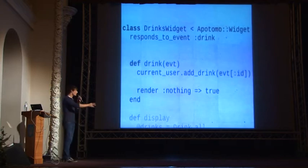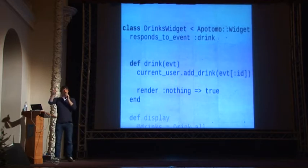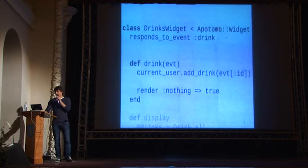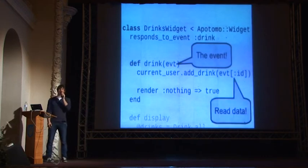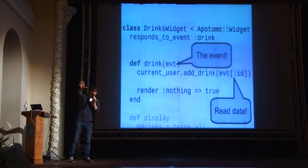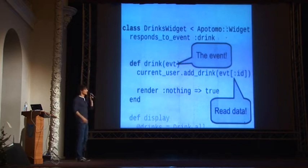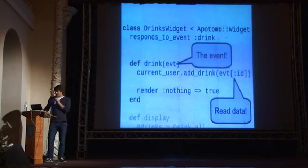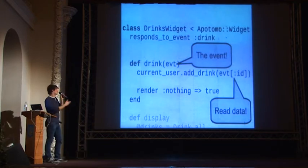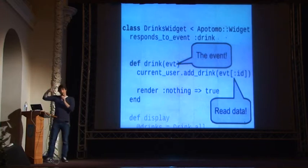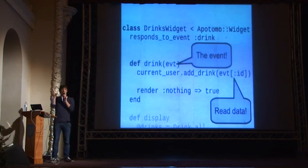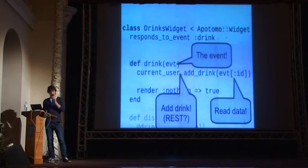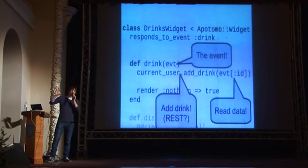As soon as I respond to an event, the drink method will be called automatically as soon as I click the button. In my state, I get the event object as the first argument — we call this state args. I can access the data attached to the event using hash access, so I can get the drink ID from the front-end using event[:id]. In my state, I add the drink to my current user, then render nothing because the drinks list shouldn't be updated — I just want to add the drink to my drinks list.